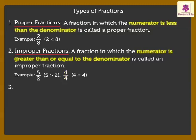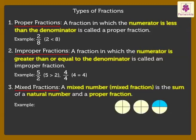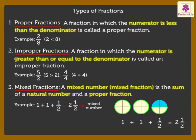3. Mixed Fractions: A mixed number, also called a mixed fraction, is the sum of a natural number and a proper fraction. Look at the three circles. The first and second circles are completely coloured and half of the third circle is coloured. When added together, we get 2 and half. This represents a mixed number, where 2 is the natural number and half is the fraction.